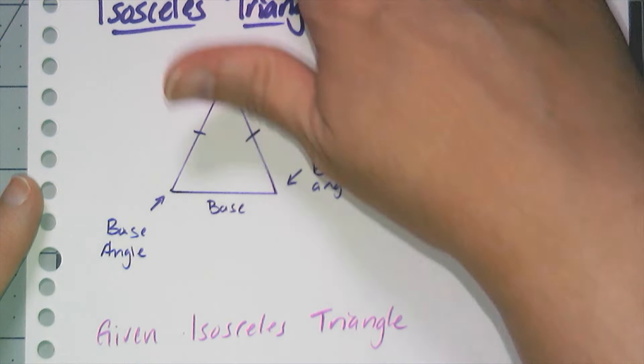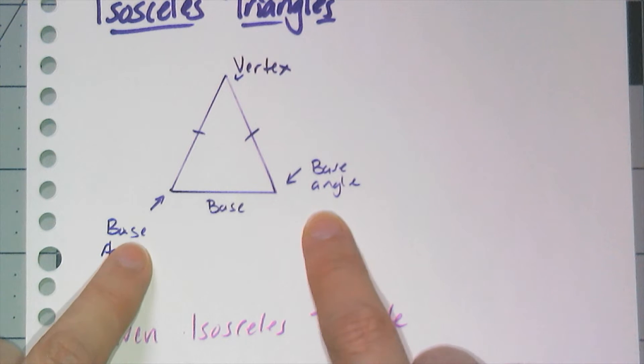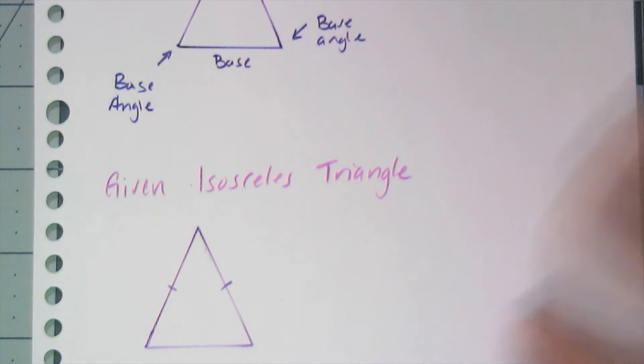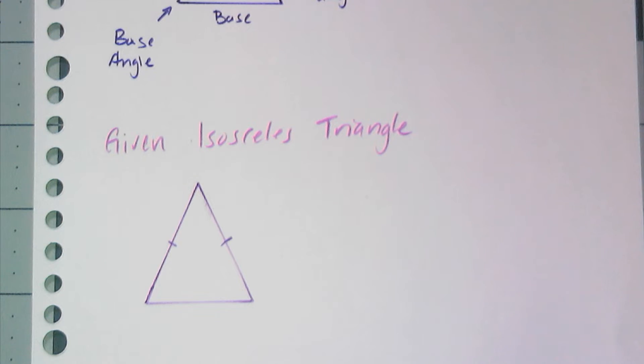And in this conjecture, I'm trying to figure out something special about the base angles. So if I just have an isosceles triangle, the only thing I have is that the two sides are congruent and that's it. I don't have a lot more information.